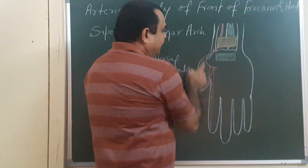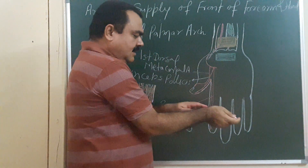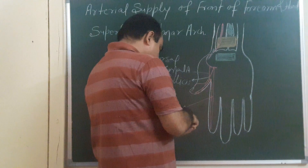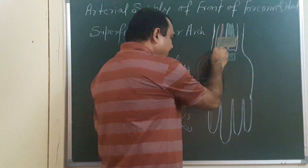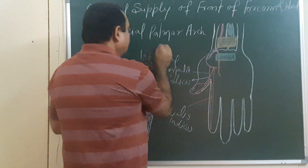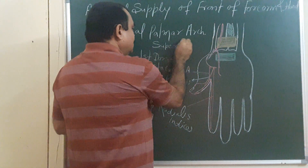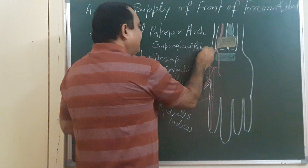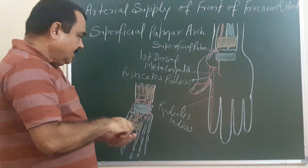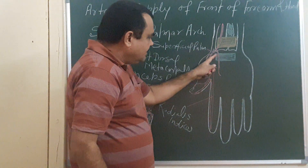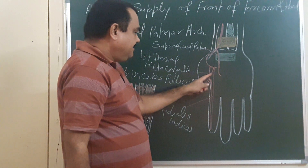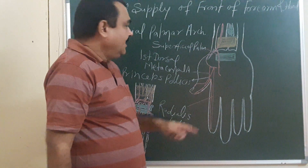Another branch — just before passing laterally into the anatomical snuff box — it gives a branch which is known as the superficial palmar branch of the radial artery. So the branches of the radial artery are: the superficial palmar branch, first dorsal metacarpal artery, princeps pollicis, and radialis indicis.